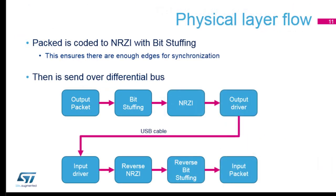Now about the physical layer. If you take an oscilloscope and put it on the pins, it will be very complicated to see what the data is, because the data is encoded. There is NRZI — Non-Return-to-Zero Inverted — coding, and also bit stuffing. If you have an issue, you won't debug it with a plain oscilloscope; you'll need tools to decode it dynamically. We often use a USB analyzer for this.